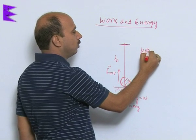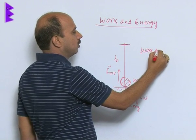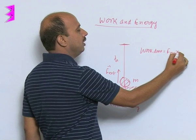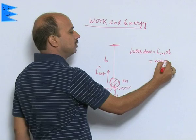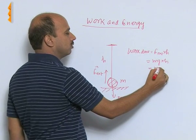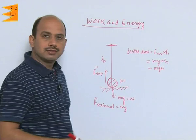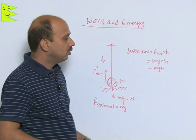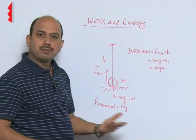The work done is equal to work done is equal to F external into h. So F external is equal to mg into h. The work done is equal to mgh. So in this case you can take work done is equal to m into g into h, that is the positive work done.